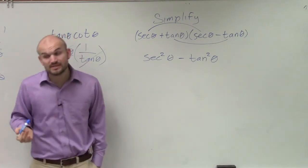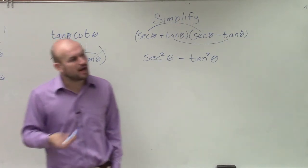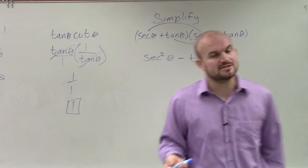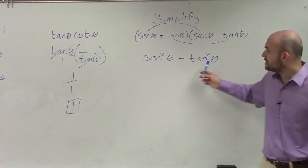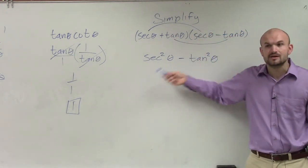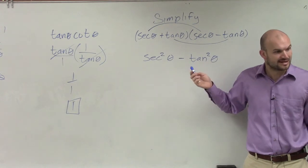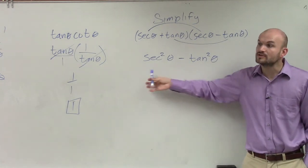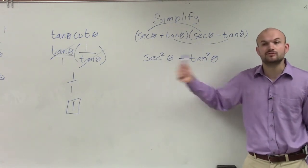It doesn't mean you're always going to be using them when you see them squared, but always look to see, would it make sense to use them? Well, thankfully for us, we know that secant and tangent are related to each other on the Pythagorean identities, right? So this would probably be a good time for me to use those identities.